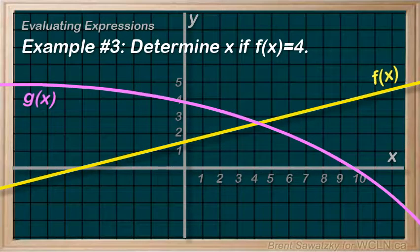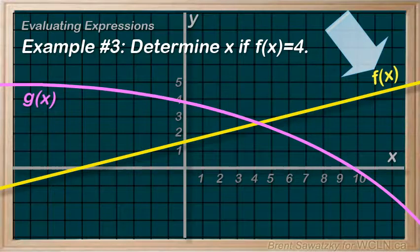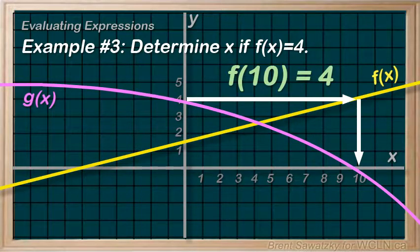Example 3: Determine x if f(x) equals 4. This one's a bit backwards. In this case, we're given the function value, or the y value, and we're asked to determine the corresponding x value. We're talking about function f, and the y value of function f is 4 right here. We follow that down to see that x equals 10 at this point. Therefore, f(10) equals 4, or x equals 10 when f(x) equals 4. They both mean the exact same thing.